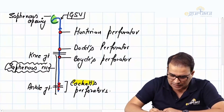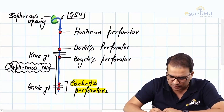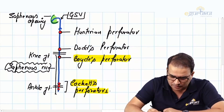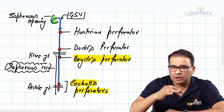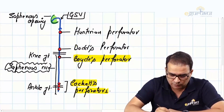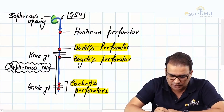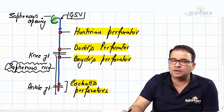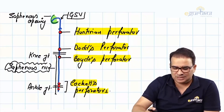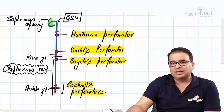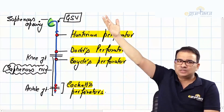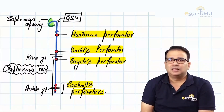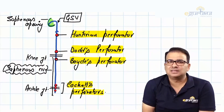To summarize the perforators and their locations: Cockett's perforators at the ankle; Boyd's perforators below the knee; Dodd's perforators above the knee; and the Hunterian perforator in the mid-thigh region — at the site of the Hunterian canal. The great saphenous vein, once it goes through the cribriform fascia in the saphenous opening, ultimately drains into the femoral vein.